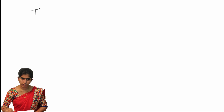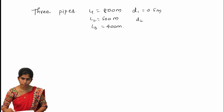The problem is: there are three pipes with lengths L1 equal to 800 meters, L2 equal to 500 meters, and L3 equal to 400 meters. The diameters are D1 equal to 0.5 meters, D2 equal to 0.4 meters, and D3 equal to 0.3 meters. These are the lengths and different diameters given in the problem.